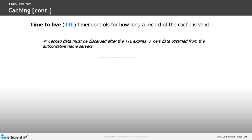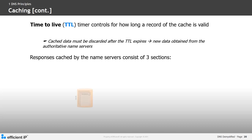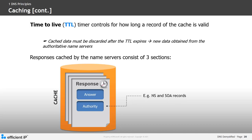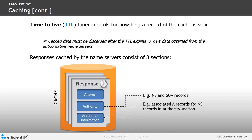The response of the query, or the record stored in the cache, will consist of three sections. First, it will have the answer to the query. Second, in the authoritative section, it will have the information of the name server and the start of authority record. Last, in the additional information section, it will have information such as the A record for the name server — providing the IP address for that name server.